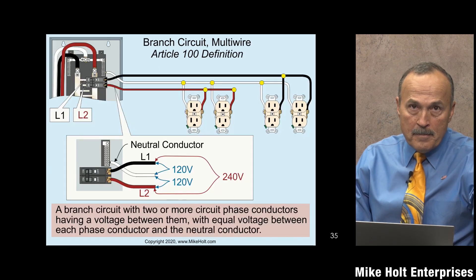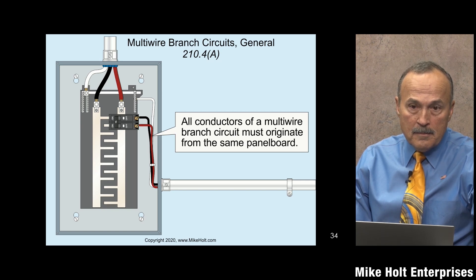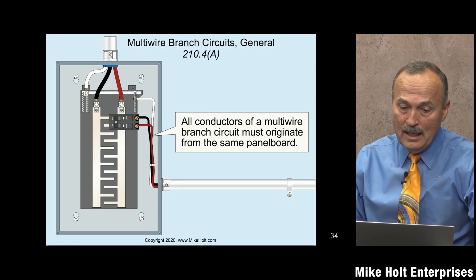The reason this rule matters — especially for new electricians — is a scenario where you have two panels side by side, each with one space left. Someone gets creative, shares a neutral, and puts one circuit from each panel. You're tracing wires through conduit and junction boxes only to find one circuit came from this panel and one from another, because both panels were full. It's creative but it's a code violation.